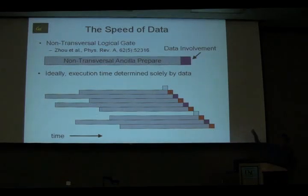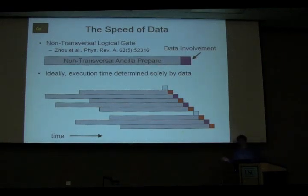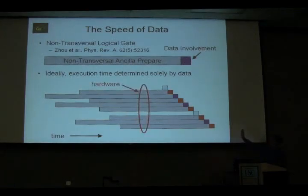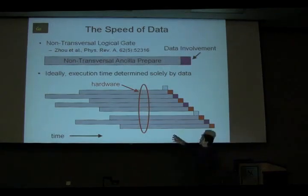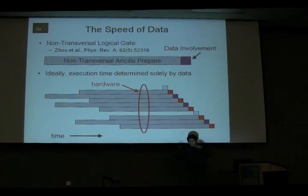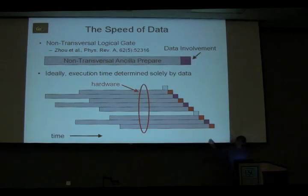Essentially, those colored boxes are the data-involved portions of various quantum operations. Time goes from left to right and each row corresponds to some logical operation. The light blue box, the first one, is some transversal logical gate — no preparation necessary. Then a QEC step, where the zero ancilla is prepared in advance, there's a data-involved portion, and so on. We can run the circuit much, much faster and our data needs to survive a much shorter time overall.